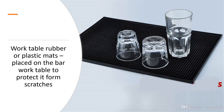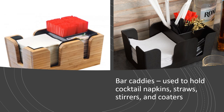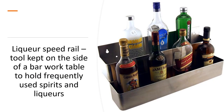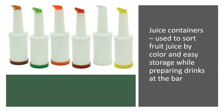Plastic mats or work table rubber are used to protect the table from scratches and other liquids; they are placed on the bar work table at the front bar. Bar caddies are used to hold cocktail napkins, straws, stirrers, and coasters. A liqueur speed rail is a tool kept on the side of a bar work table and is used to hold frequently used spirits and liqueurs. In the bar area, ingredients are not kept in their original branded bottles or cans — they are transferred into juice containers sorted by color for easy identification and storage while preparing drinks.